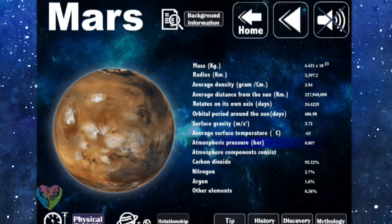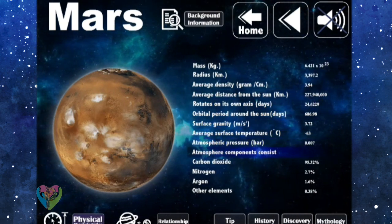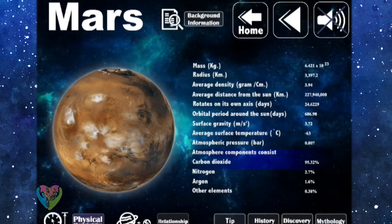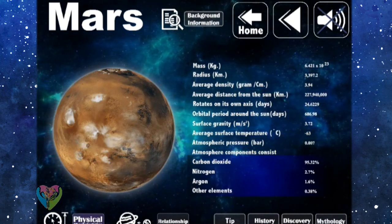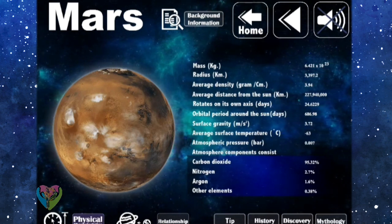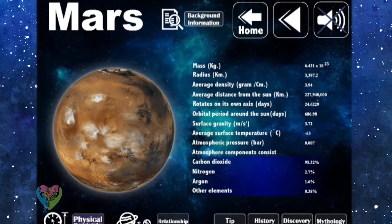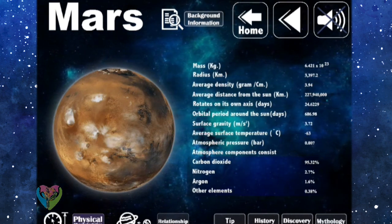Average surface temperature is negative 63 degrees Celsius. Atmospheric pressure is 0.007 bar. Atmosphere components consist of 95.32% carbon dioxide, 2.7% nitrogen, 1.6% argon, and 0.38% of other elements.